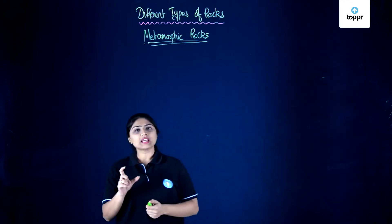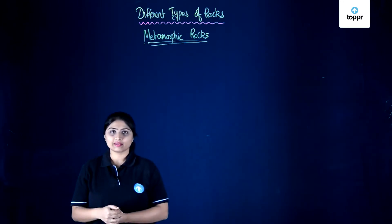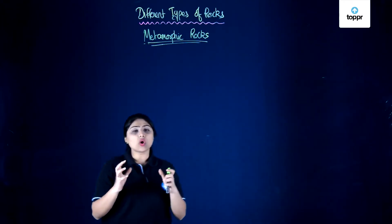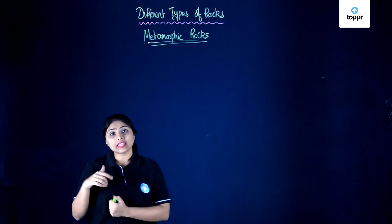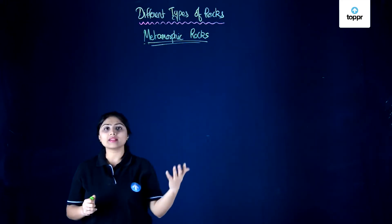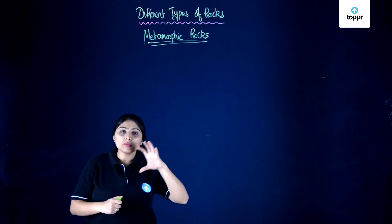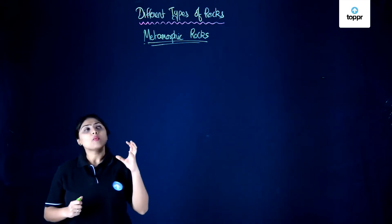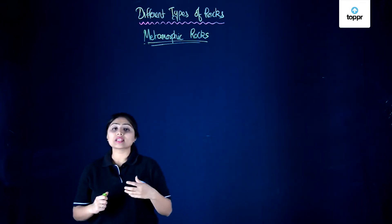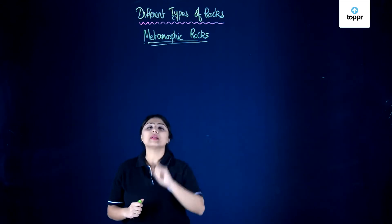We are going to study about the third type of rock — metamorphic rocks. We've already learned about igneous rocks and sedimentary rocks. When these rocks undergo certain changes, they become metamorphic rocks. When you hear the word 'morph,' it means to change or to be transformed. Because sedimentary and igneous rocks undergo some transformation, the rocks formed are called metamorphic rocks.